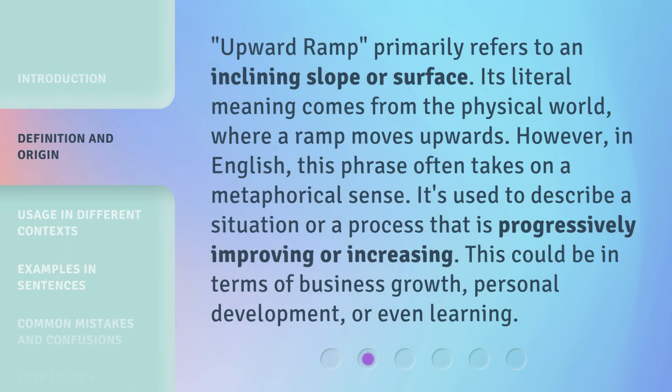Upward Ramp primarily refers to an inclining slope or surface. Its literal meaning comes from the physical world, where a ramp moves upwards. However, in English, this phrase often takes on a metaphorical sense. It's used to describe a situation or a process that is progressively improving or increasing. This could be in terms of business growth, personal development, or even learning.